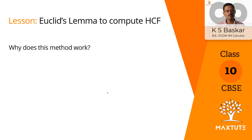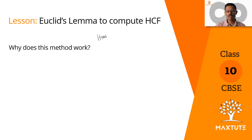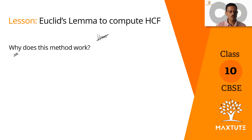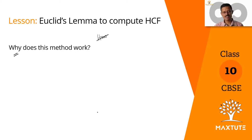We're going to use Euclid's division lemma to compute the HCF. This video is not about the how — the how was done in the last video. This video is about why. Why does this method work? Let's look at the mechanics behind it.